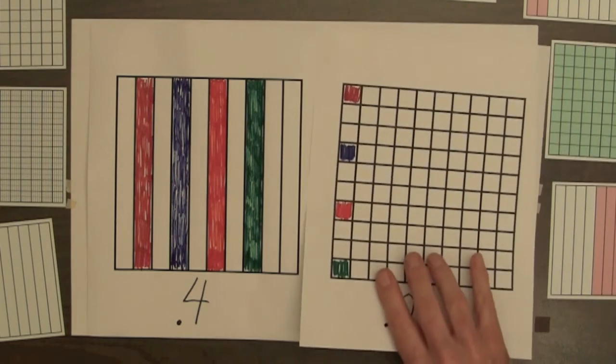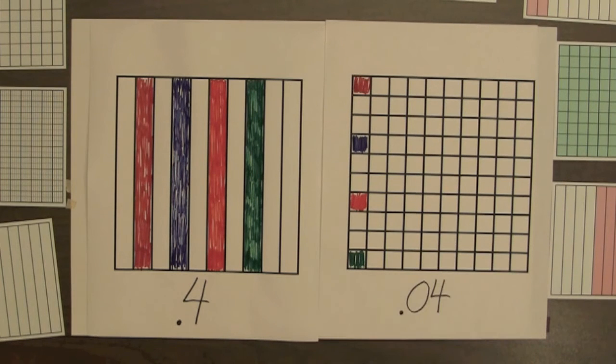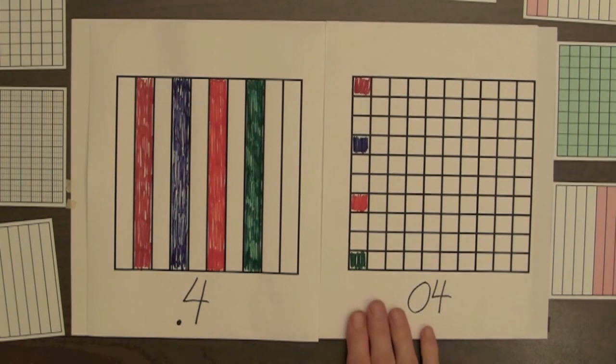In one final example, 4 hundredths, or 4 parts out of 100, have been shaded for this square.